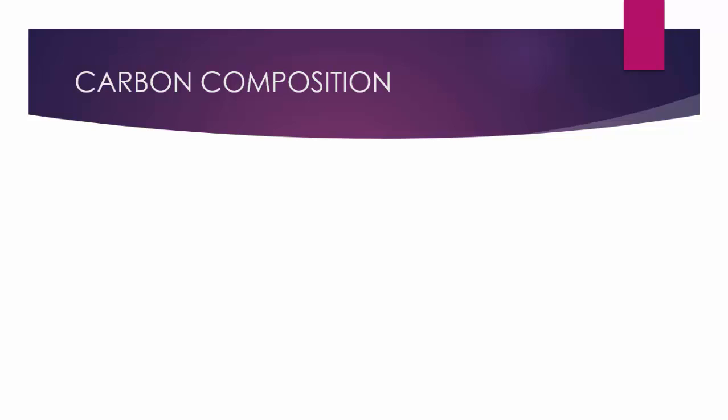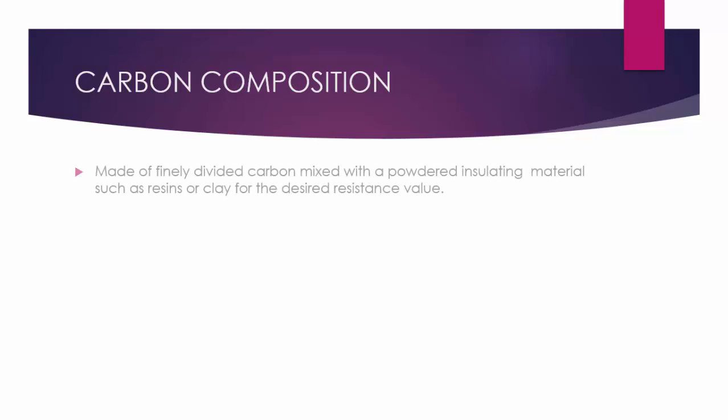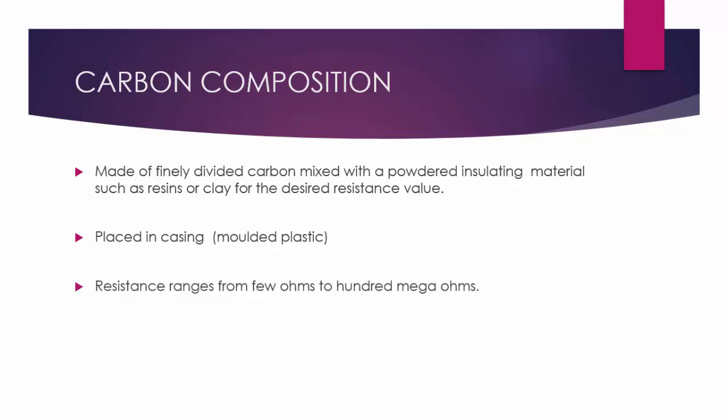Starting with the carbon composition resistor. It is made of finely divided carbon mixed with a powdered insulating material such as resins or clay to achieve the desired resistance value. These are placed in a casing with lead wires of tin copper. Resistance ranges from a few ohms to 100 mega ohms, with a power rating from 1/8 to 2 watts.